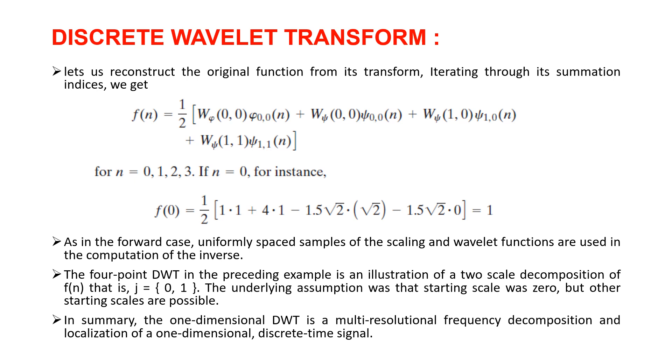By using inverse discrete Wavelet transform, we can reconstruct the original function from its transform by iterating through its summation indices. For example, if we take n=0, we get the value 1, f(0). As in the forward case, uniformly spaced samples of the scaling and Wavelet functions are used in the computation of the inverse.